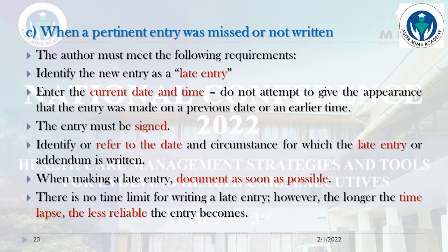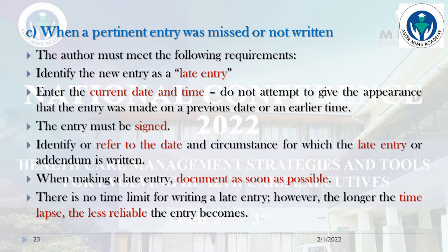When a pertinent entry was missed or not written, the author must identify the new entry as a late entry, enter the correct date and time, and not attempt to give the appearance that the entry was made on a previous date or earlier time. The entry must be signed and should identify or refer to the date and circumstances for which the late entry or addendum is written. Document as soon as possible — there is no time limit for writing a late entry, but the longer the time lapse, the less reliable the entry becomes.